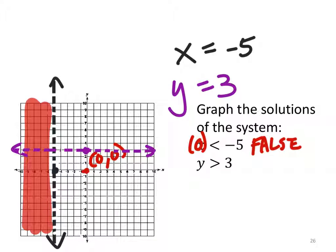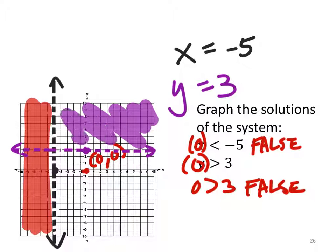So we can still test the point 0, 0, but we're only going to replace the y, and is 0 greater than 3. That is also false. So we'll shade the other side of that line up on the top.